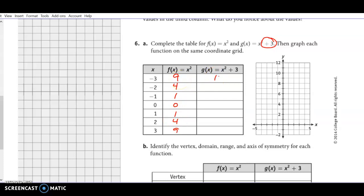But when we add 3 to it, so 9 plus 3 is 12, 4 plus 3 is 7. This is a 4. This is a 3. And then again, 4, 7, 12. And now when we graph it, we can see that we are starting at (0, 3).